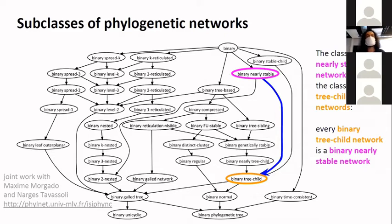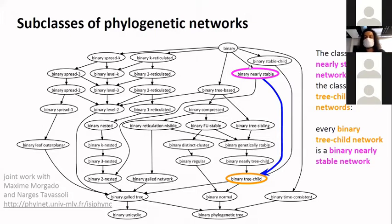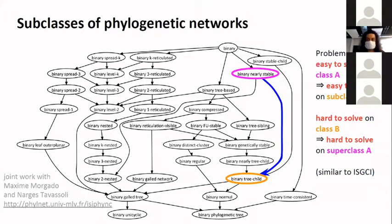This hybridization problem is a good example of how you can simplify not only the problem you're studying, but also what you expect to obtain. The network you are reconstructing could be a binary network as general as possible, but many classes and restrictions on networks have appeared in the literature. They are summarized on a graph made with two students, Maxime Morgado and Nargès Tavassoli, available on a website. Those classes represent sets of phylogenetic networks with a special property, and the arrows show containment — for example, the class of binary stable networks contains the class of binary treechild networks.